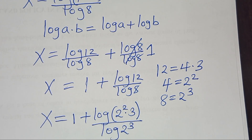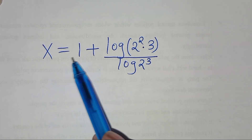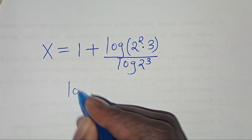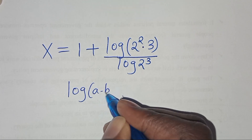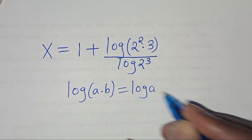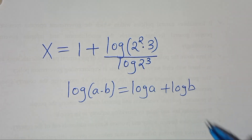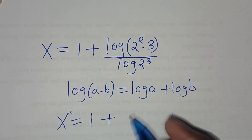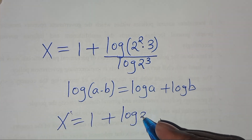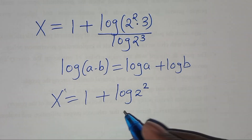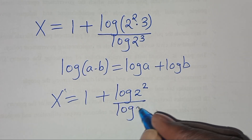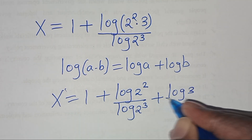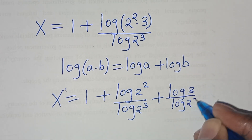We have x equals 1 plus log(2² × 3). This is in the form log(a × b), which we can express as log(a) + log(b). Applying this property, x equals 1 plus log(2²)/log(2³) plus log(3)/log(2³).